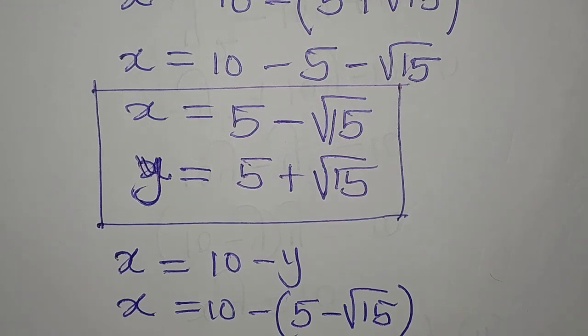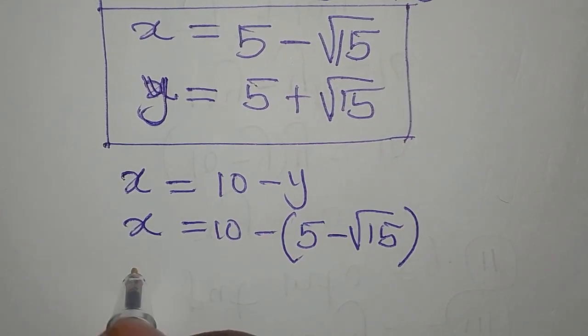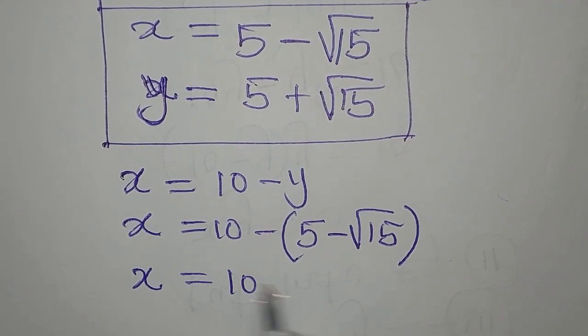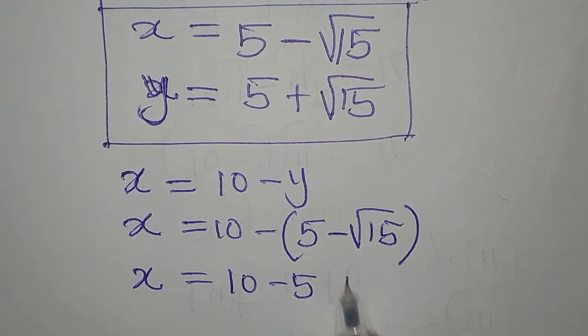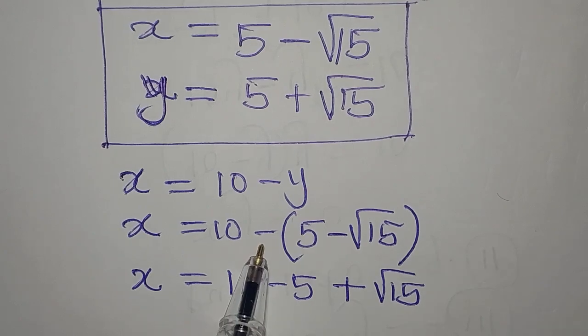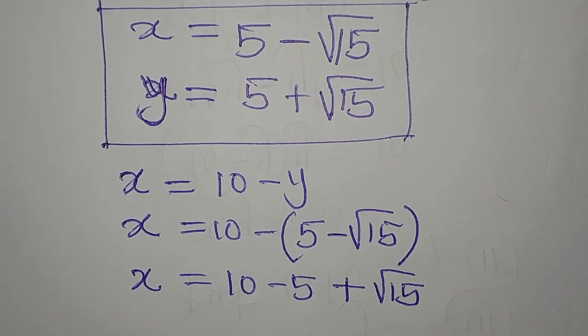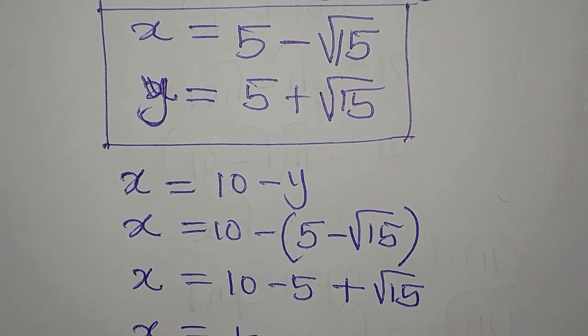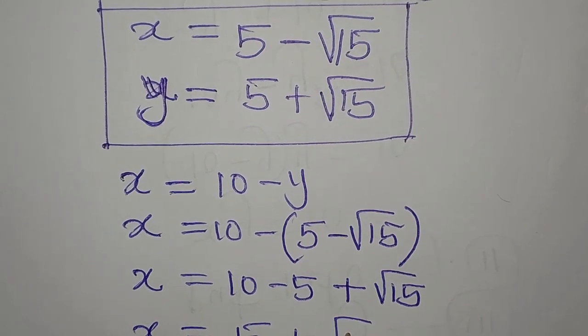So if we put this in now, we're going to have again x to be 10 minus 5, and this turns to plus root 15 because negative times negative is positive. Our x from here is 10 minus 5 is 5, then we have plus root 15.